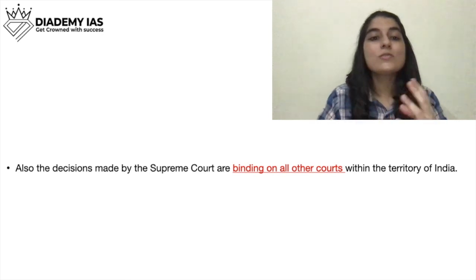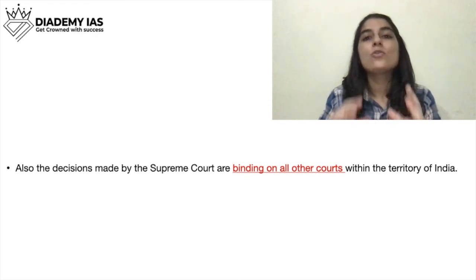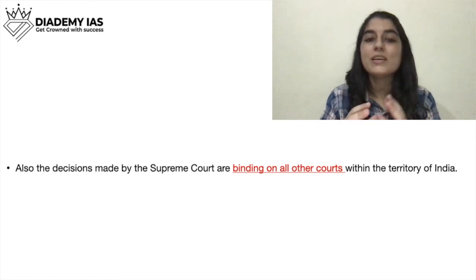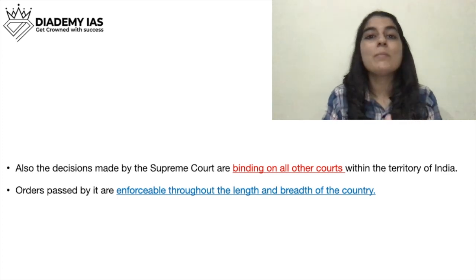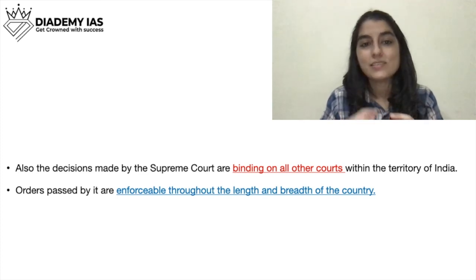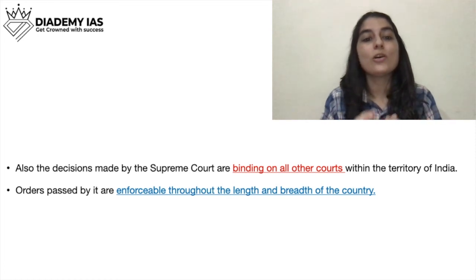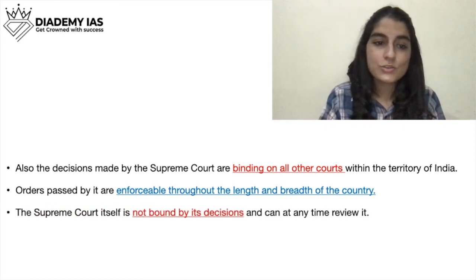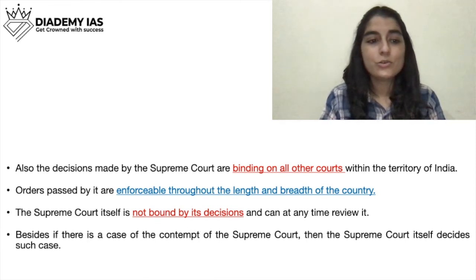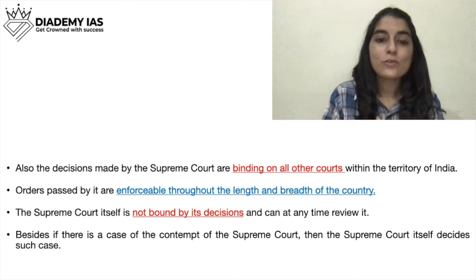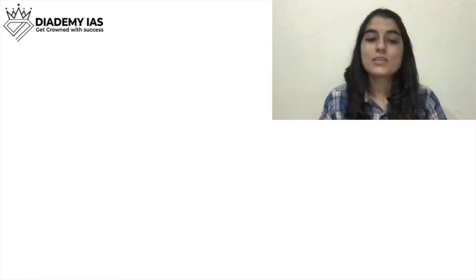Importantly, the Supreme Court is not bound to give advice even if the President asks, and the President is not bound to accept such advice if given. Advisory jurisdiction allows the government to seek legal opinion before taking action, which may prevent unnecessary litigation later. In light of the Supreme Court's advice, the government can make suitable changes in its actions or legislation. Also, the decisions of the Supreme Court are binding on all other courts within the territory of India, but the Supreme Court itself is not bound by its own decisions and can renew them at any time. If there is a case of contempt of court, the court itself decides such cases.